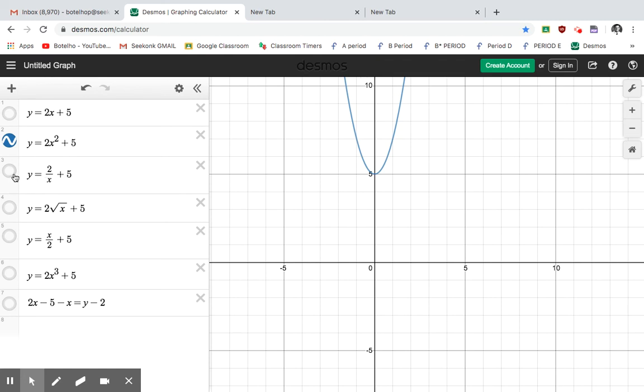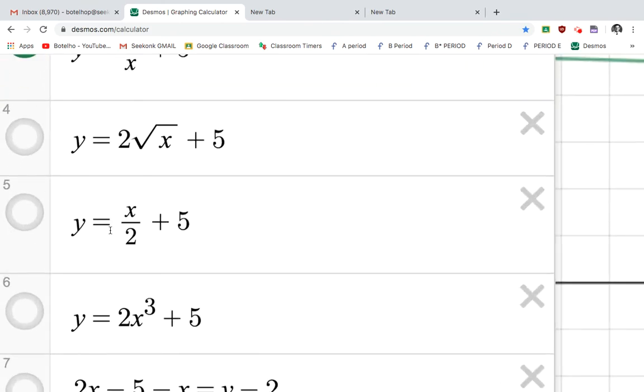This is actually a split. There's a curve here and a curve here. Now just to prove it to you, if I graph this one here with the x at the top, you can see that here now it's a straight line.